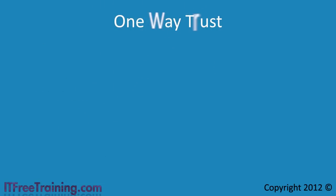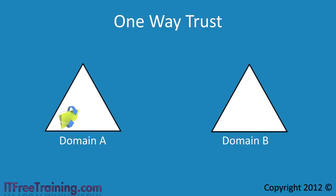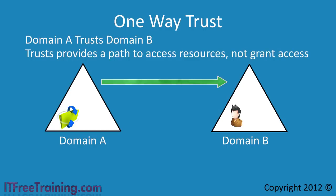Let's look at an easy way to understand the terminology when dealing with a one way trust. Say you have domain A with a share in it, and a user in domain B called John. The question is: does domain A trust John? In order for a user to access a resource in another domain, the other domain must trust that user. You were told that domain A trusts domain B. Since John is in domain B, he can access resources in domain A. This of course assumes that John has access to these resources. The trust relationship only creates the path for a user to access a resource — it does not grant them permissions.